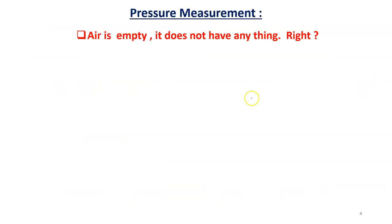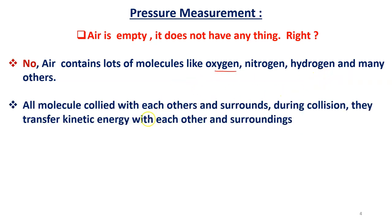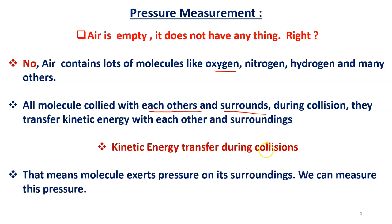Consider air — you might think air is empty, but in modern science, air contains many molecules such as oxygen, nitrogen, and hydrogen. These molecules collide with each other and with their surroundings. During collisions they transfer kinetic energy, which means the molecules exert pressure on their surroundings. This pressure arises from molecular motion and can be measured.